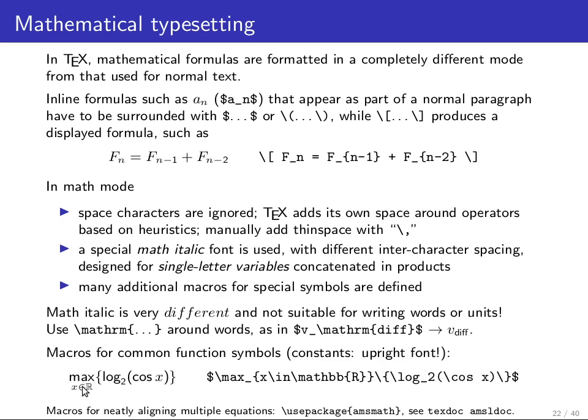Because there are a lot of common constant function symbols, for example, cosine or logarithm or the maximum function, it would be tedious to use for all of these math RM or the backslash operator command available for typesetting such names. Therefore, these have been predefined. You can just type backslash max or backslash log and then you get the upright constant function typeset.